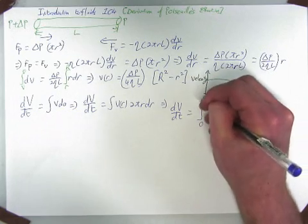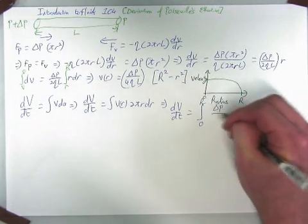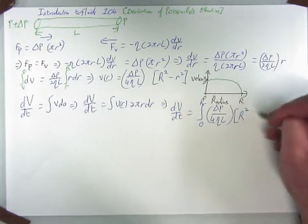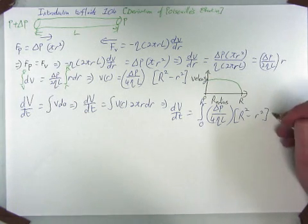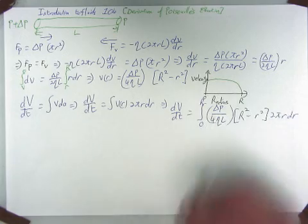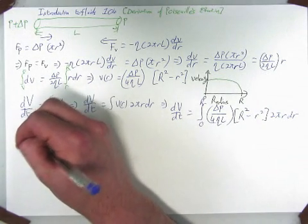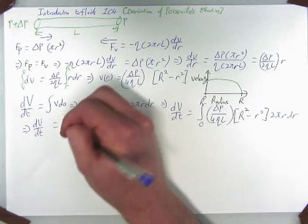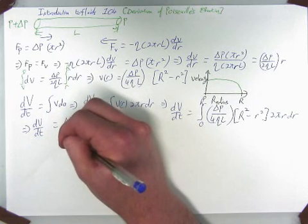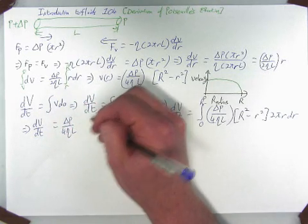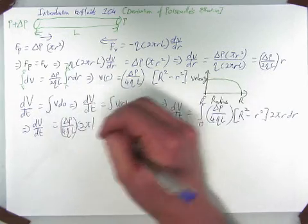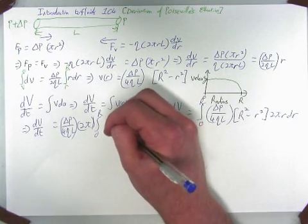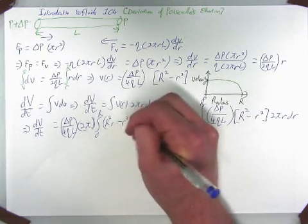From 0 to big R of delta P over 4 mu L times 2 pi times the integral from 0 to R of R squared times little r minus little r cubed dr.